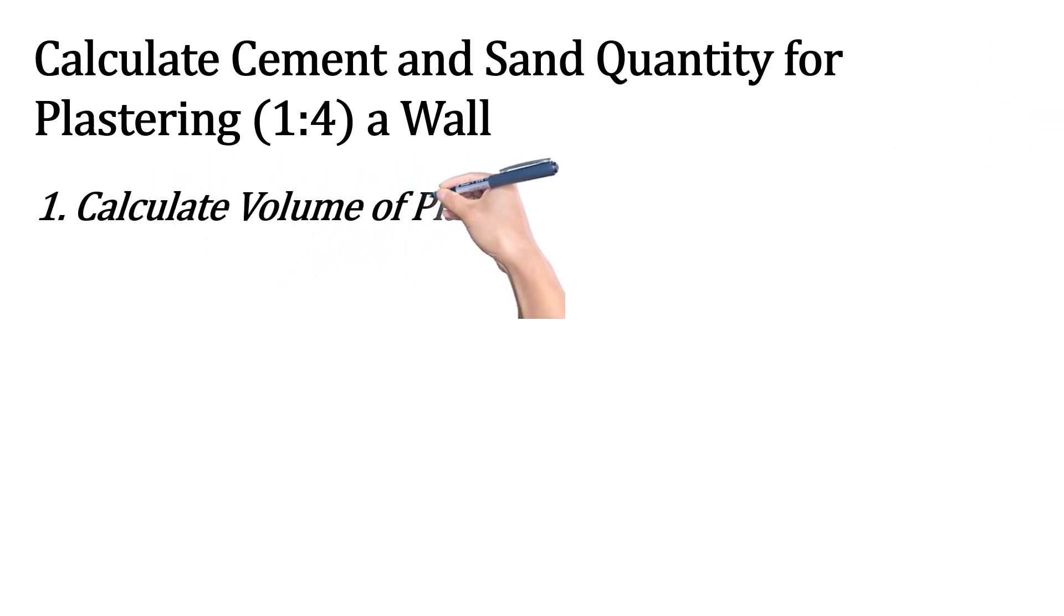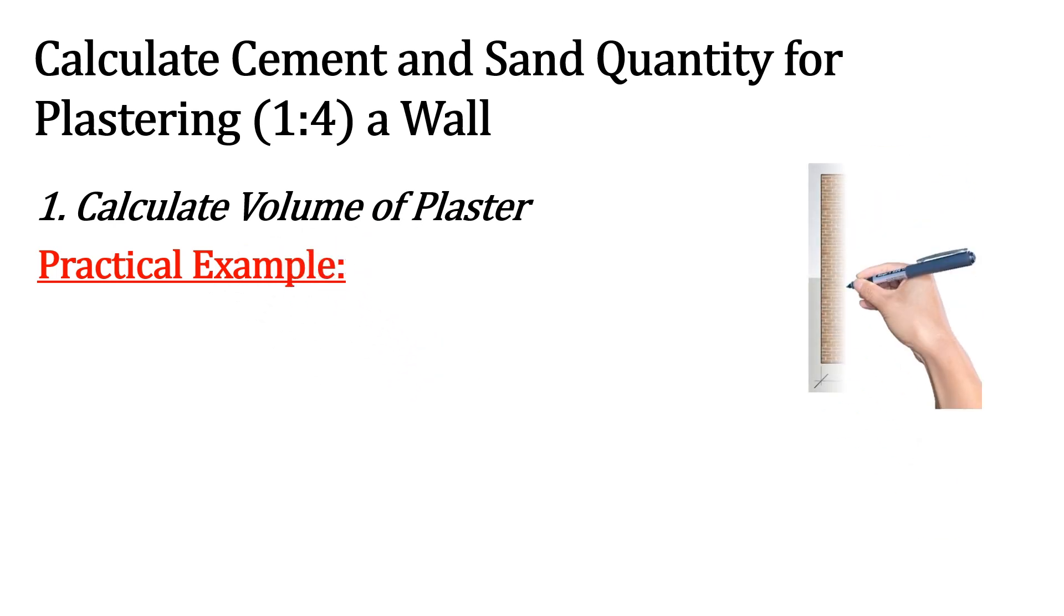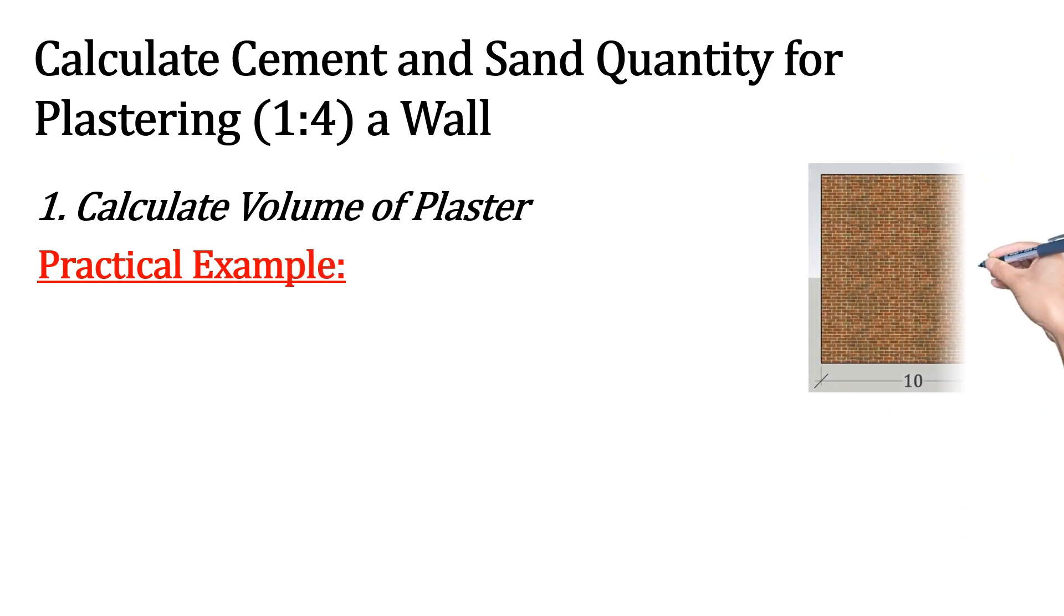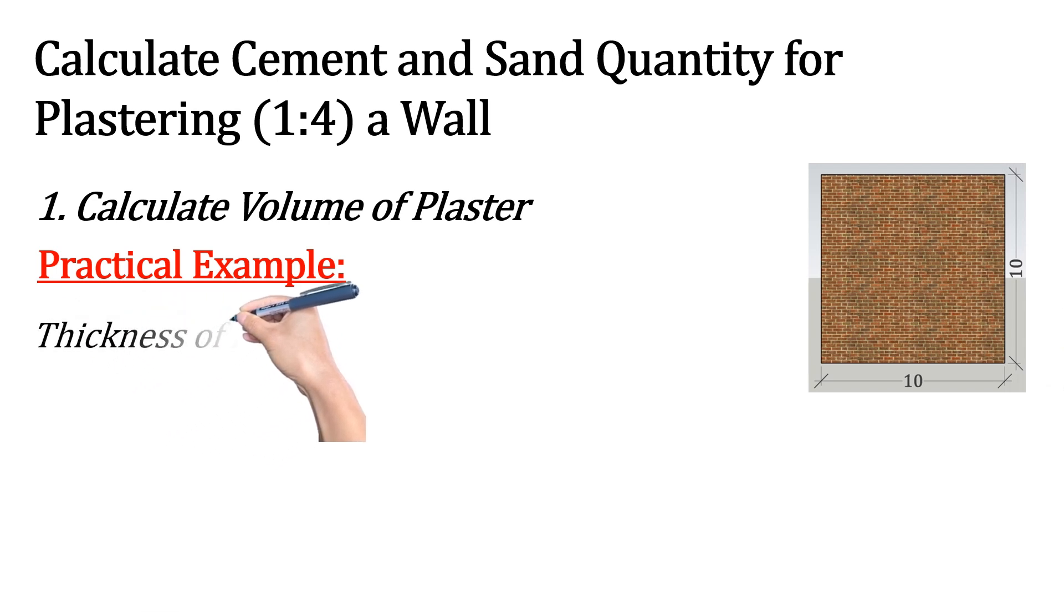First, let's calculate the wet volume of the plaster. For this example, as you can see in the picture, the wall has a length of 10 meters and a width of 10 meters. Let's suppose the thickness of plaster is 12 mm.